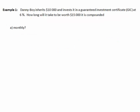Let's look at the first one here. Danny Boy inherits $10,000 and invests it in a GIC at 6%. We want to find out how long will it take to be worth $15,000 if it is compounded monthly. For this one, we're doing monthly, so we can use our formula A equals P times 1 plus R over N to the Nt, our formula for compound interest.